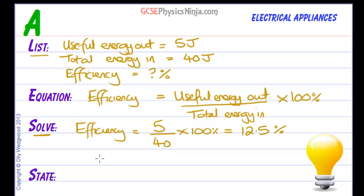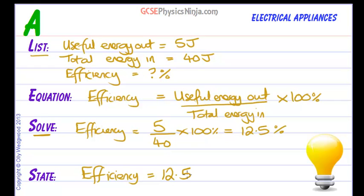12.5%. Remember that efficiency does not have any units as such — it is just a fraction, a ratio, or a percentage. So the answer is 12.5%. And there we have it: list-equation-solve-state, with the little twist that we had to find the useful energy out first.